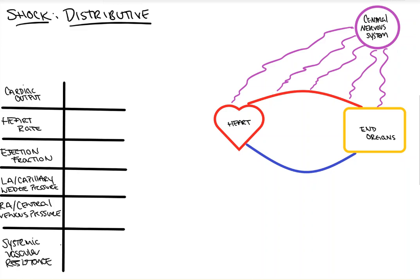So I've drawn the diagram I'm going to draw for all my shock videos. We have the heart, we have the arterial system which gets blood to the tissues, we have the venous system which returns blood to the heart from the tissue, and then we have the nervous system which innervates these systems. The problem in this case is here at the arterial system.